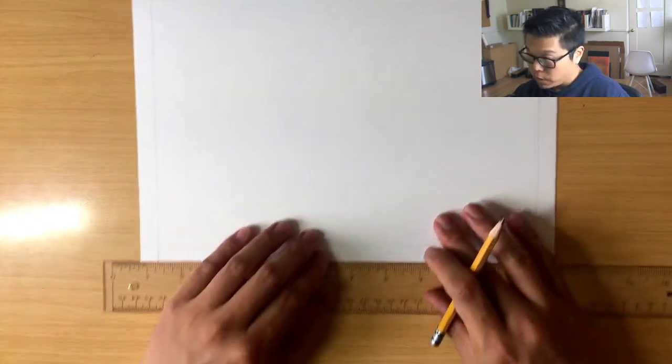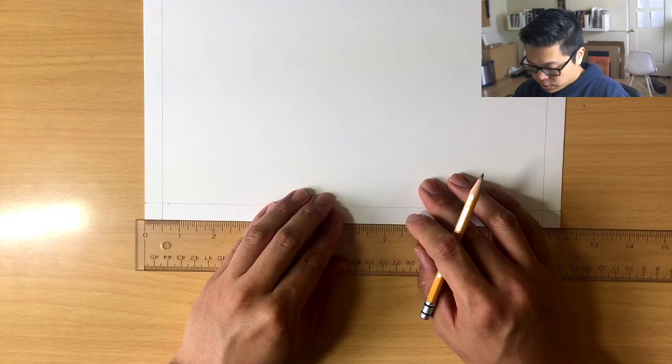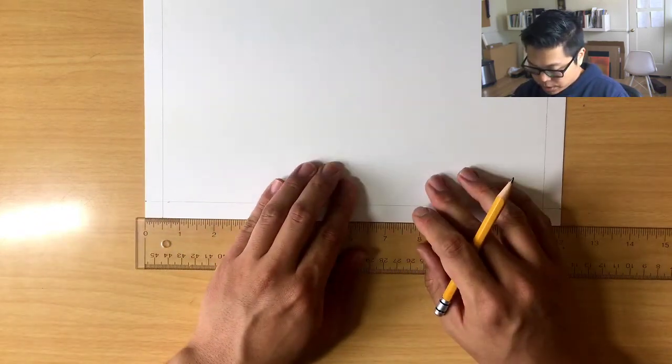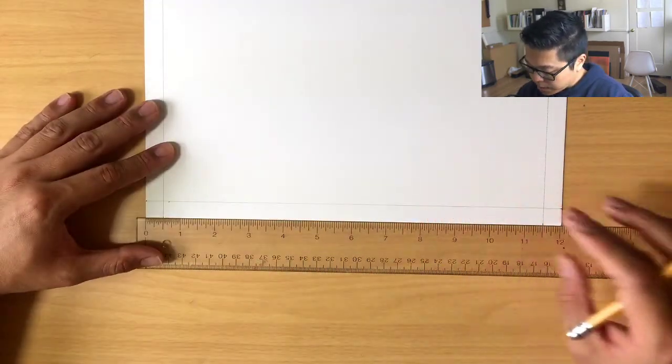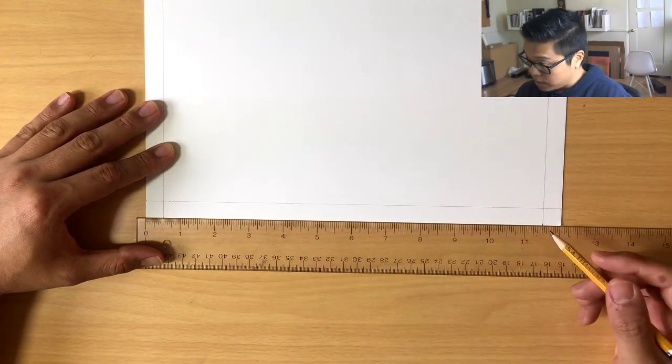To do that, we have a similar process, but we're going to make way more marks. So starting point is the same. Use the long side of your paper. Lay it right up against the edge of your ruler. Align it with the zero-inch mark on the left side. Now, every time you see an inch marker, you're going to make a small dot.